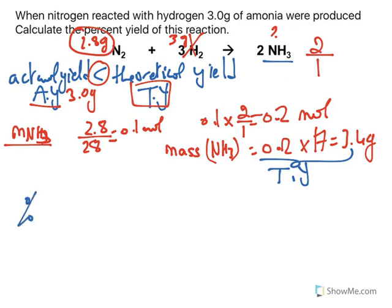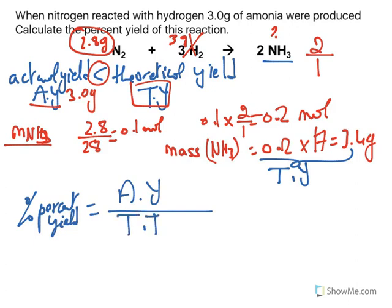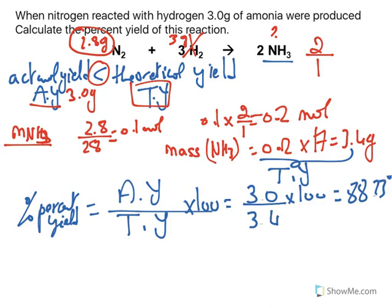Therefore, now the percent yield is the actual yield divided by the theoretical yield multiplied by 100. So it is 3 divided by 3.4 multiplied by 100, and the answer is 88.23%. So this reaction is successful by 88%.